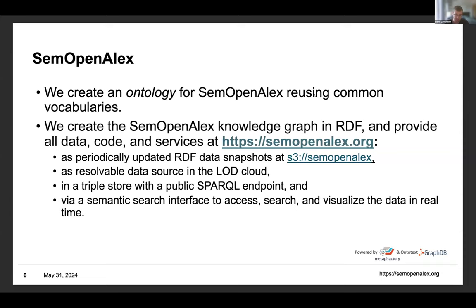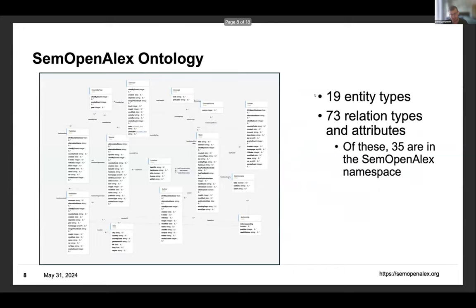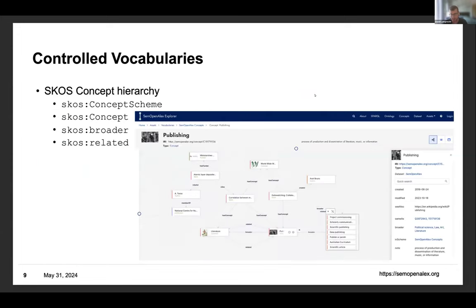When creating the SemOpenAlex ontology, we follow the entity types of OpenAlex. In total, the SemOpenAlex ontology contains 19 different entity types and 73 relations among them and other attributes. For modeling the concepts, we model the concepts of papers and newly introduced topics and keywords in controlled vocabularies.